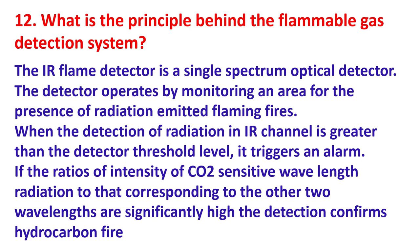What is the principle behind the flammable gas detection system? The IR flame detector is a single-spectrum optical detector. It operates by monitoring an area for the presence of radiation emitted by flaming fires. When the detected radiation in an IR channel is greater than the detector threshold level, and the ratio of intensity of CO2-sensitive wavelength radiation to that of the other two wavelengths is significantly high, the detection confirms a hydrocarbon fire.